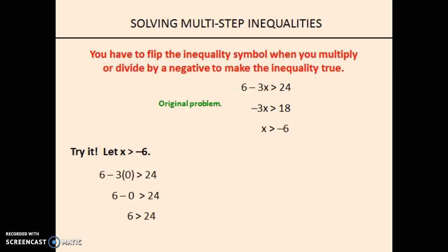Any time you multiply or divide by a negative number when working with inequalities, you have to switch the inequality sign in order to make it true. If we look at this problem again, we end up with x is greater than negative 6 if we don't flip it. Let's pick a number. How about 0? Where the x is, we put the 0 in. So, 6 minus 0, 3 times 0 is 0, 6 minus 0 is 6, and 6 is greater than 24. Not true. 6 is not greater than 24.